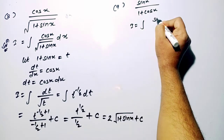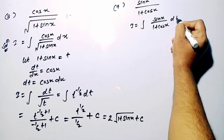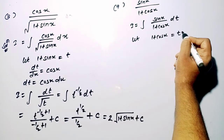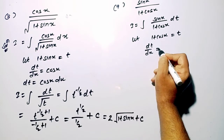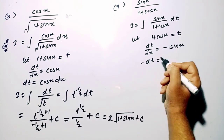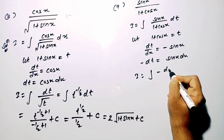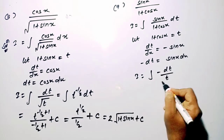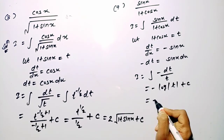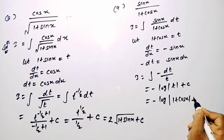The next question is sin x divided by 1 plus cos x dx. We consider 1 plus cos x equal to t. Differentiating on both sides, dt by dx equals minus sin x, so minus dt equals sin x dx. Substituting, the integral becomes minus dt upon t, giving minus log t plus c. The final answer is minus log(1 plus cos x) plus c.